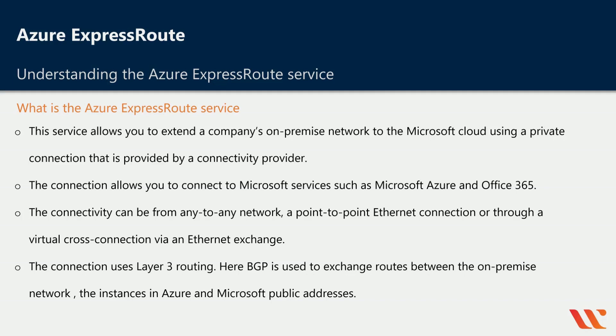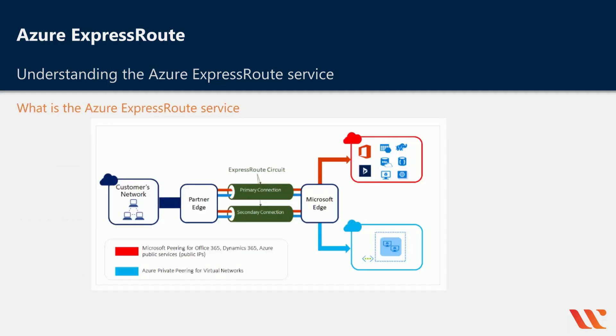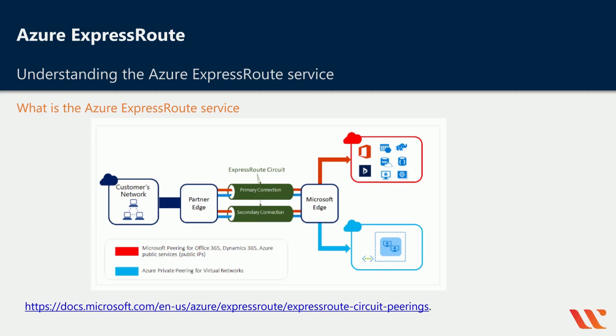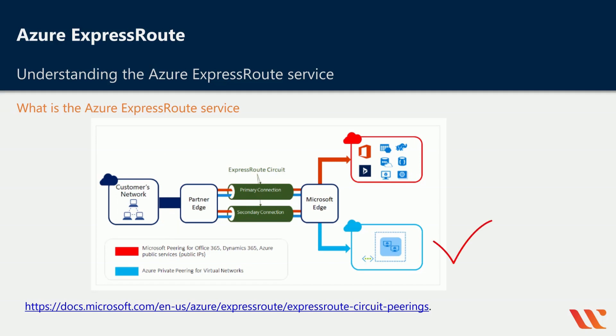BGP is used to exchange routes between the on-premise network, the instances in Azure, and Microsoft public IP addresses. Over here I am showing the pictorial representation of the Azure ExpressRoute service, taken from the Microsoft documentation. The entire idea of ExpressRoute is to connect the customer's network onto either your Azure virtual network or onto public services such as Azure SQL databases, Azure storage accounts, or even Office 365.